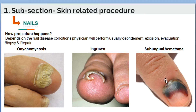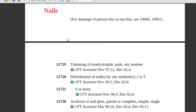Let's have a look at the CPT book for the nails subsection of the integumentary system. Code 11719 — the description of this code is trimming of non-dystrophic nails, any number.